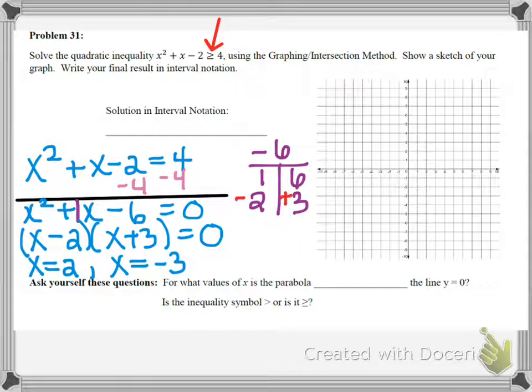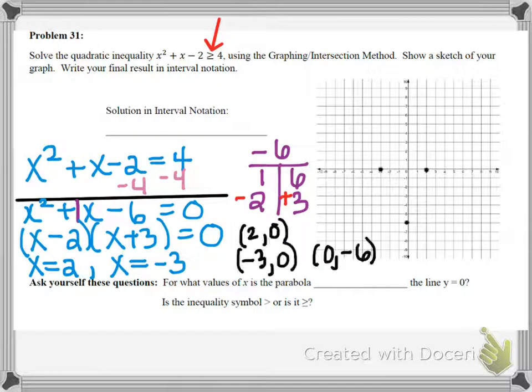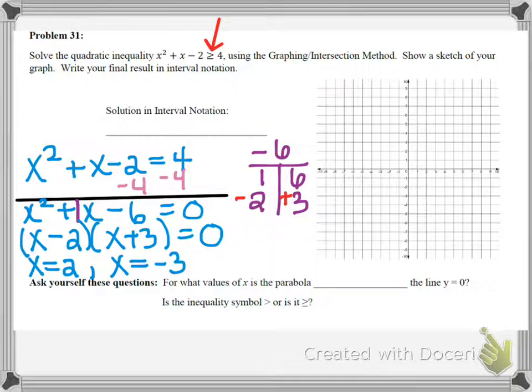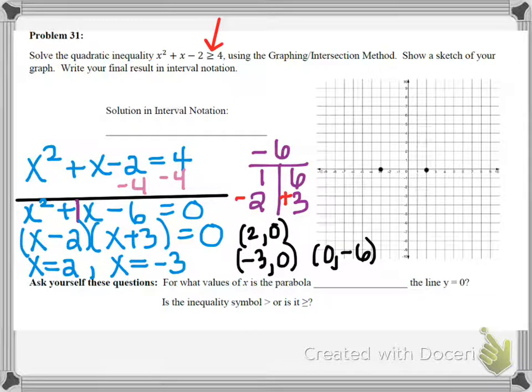So now I have x equals 2 and I have x equals negative 3. So what I'm able to do now is I am able to get my x-intercepts. My first x-intercept is at the ordered pair 2 comma 0. My other x-intercept is at the ordered pair negative 3 comma 0. So let's plot those on the graph. And while I'm at it, let me use the c value of the equation 0 or negative 6 to get my y-intercept, which is at 0, negative 6.